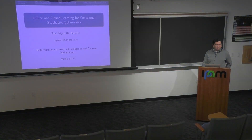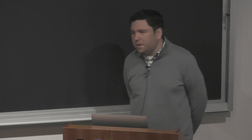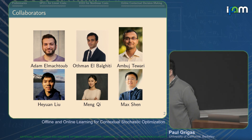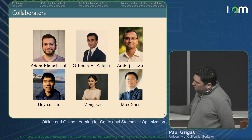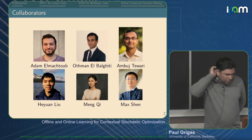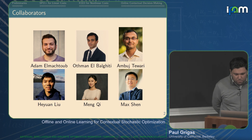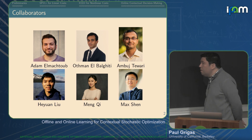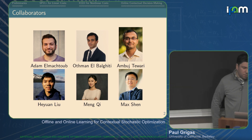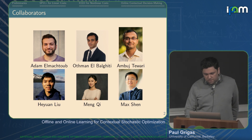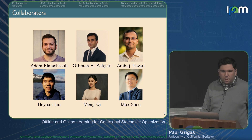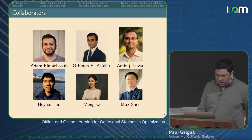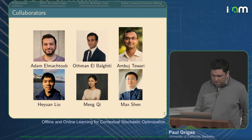I'll be talking about offline and online learning for contextual stochastic optimization. I want to acknowledge my collaborators first. This is a line of work — a series of papers done with Adam El-Mashtoub, Othman El-Balgiti, Ambuj Tiwari, Hewan Liu, Meng Kui, and Max Shen. I'll point out the various papers as I get to them, and I just want to thank my collaborators for their help with this great work.